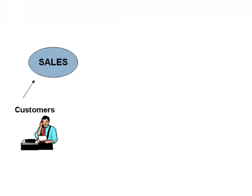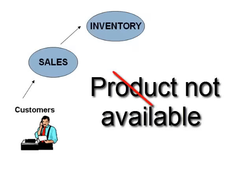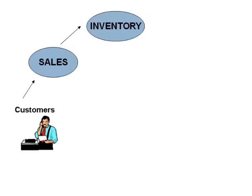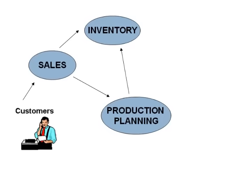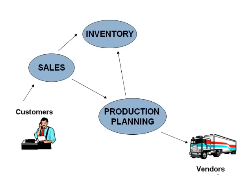A client approaches the sales team to buy a particular product. The sales team approaches the inventory department to check the availability of the product. The product is out of stock, so the sales team approaches the production planning department to manufacture the product. The production planning team checks with the inventory department for availability of raw material. If raw material is not available, the production planning team buys the raw material from the vendors.